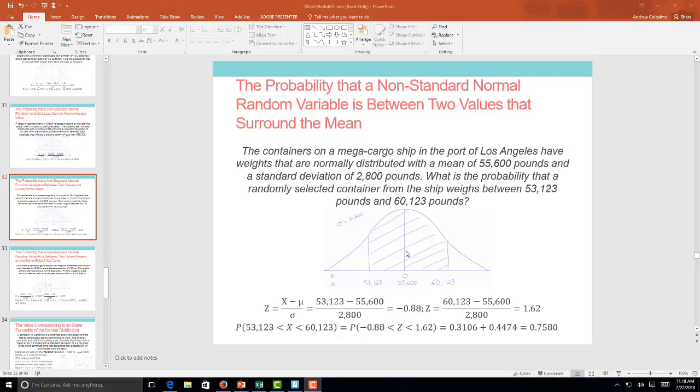So what we first want to do is convert these pounds into Z-scores. We'll actually look at both at the same time. This is looking at the 53, the point on the left. So we have 53,123 minus 55,600, which is our mean, divided by our standard deviation of 2,800. We get a negative Z-score of 0.88. Once again, it's negative on the left side.